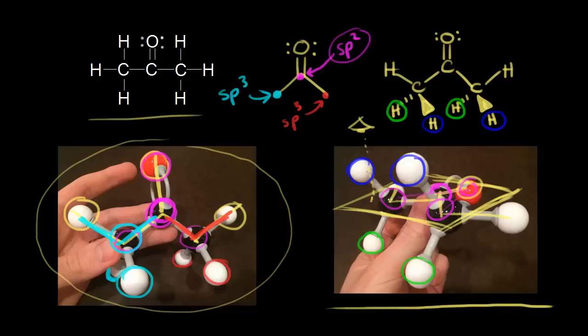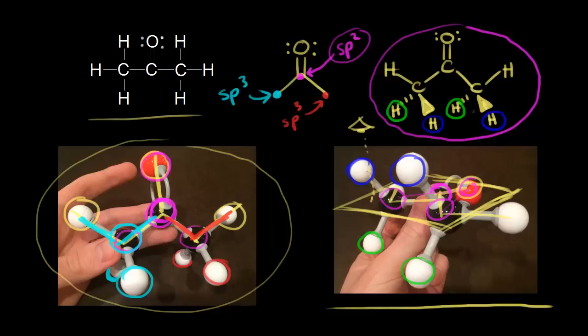For acetone, you normally wouldn't draw out a three-dimensional bond line structure - there's not much of a point. I did it to help visualize things and to contrast an sp2 hybridized carbon with an sp3 hybridized carbon in three dimensions. Pretty much for something like acetone, you'd stick with the standard bond line structure.